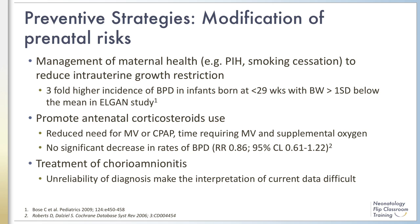Therefore, good prenatal care to treat maternal morbidities, such as pregnancy-induced hypertension, and decreased environmental exposure, such as maternal smoking, to reduce the incidence of intrauterine growth restriction might be effective.